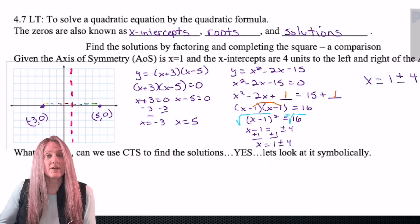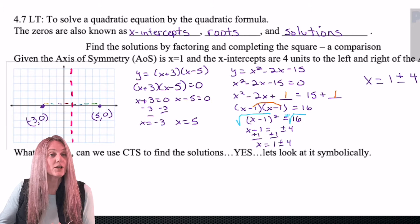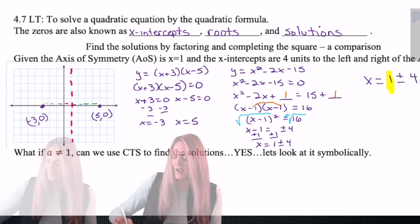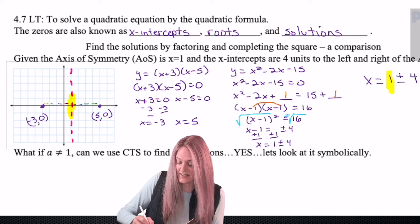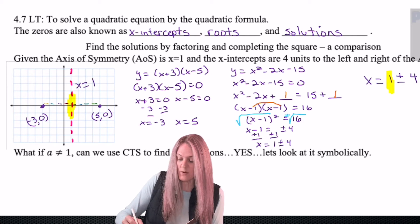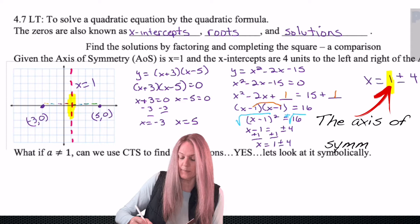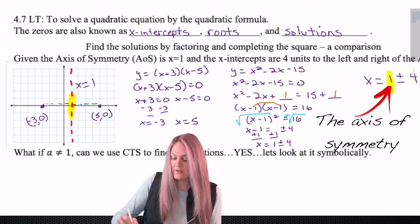Of course we're going to finish and find the solutions, but let's pause just a moment. Look at what we have graphically. I notice that we have this 1 and the axis of symmetry is right there at 1. x equals 1. Hmm. What else do you notice?